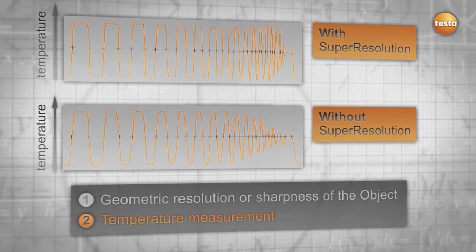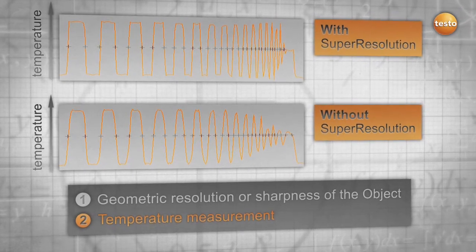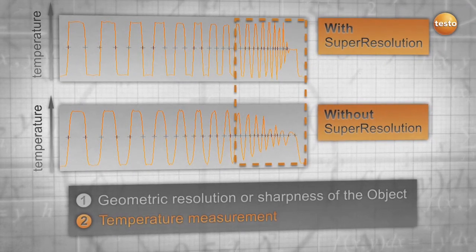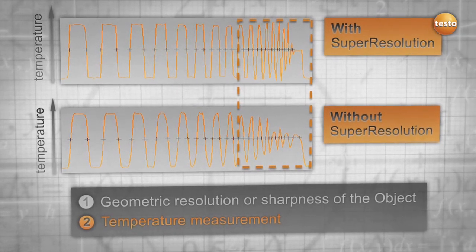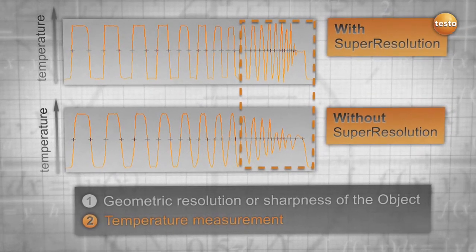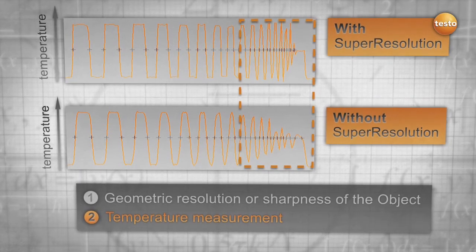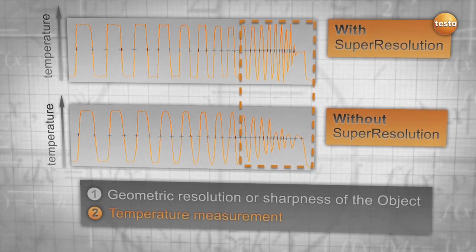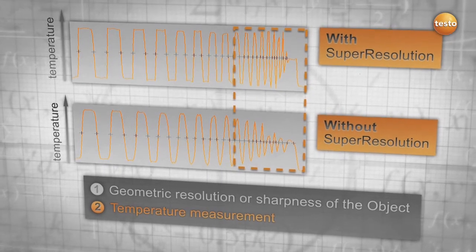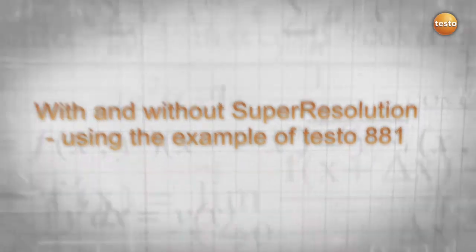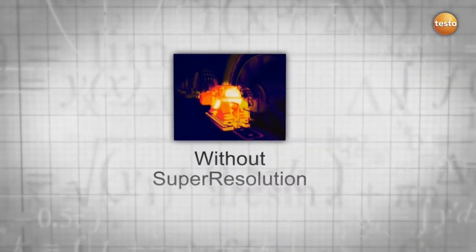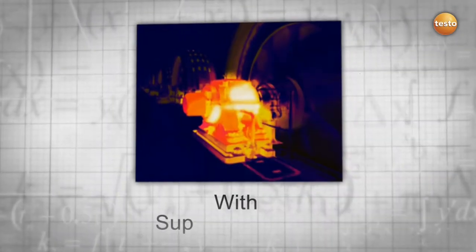Without Super Resolution, the temperature is not correctly displayed where the slots get tighter, and the thermographer might be in danger of logging in wrong numbers which might lead to wrong conclusions. With Super Resolution, the measurement even of tiny structures remains overall more accurate.